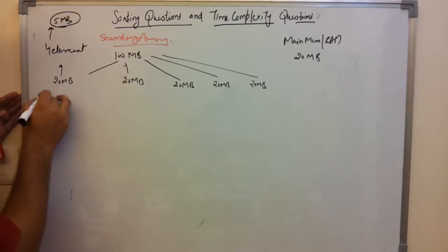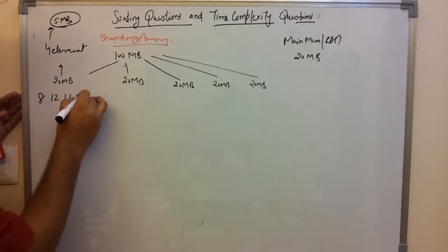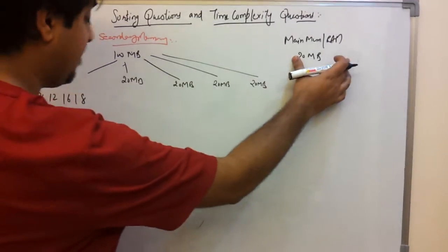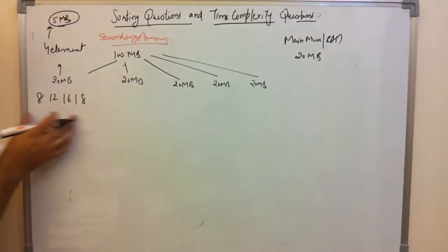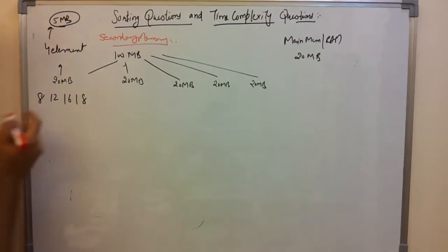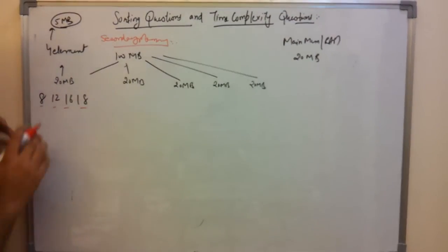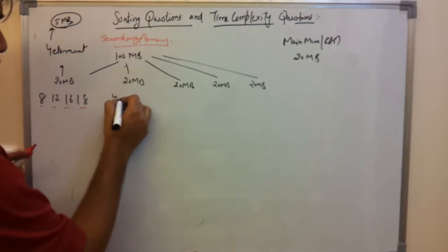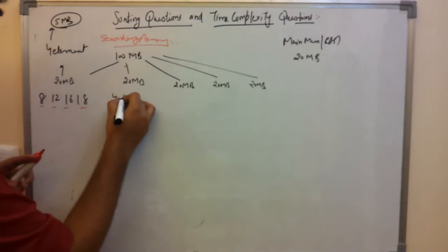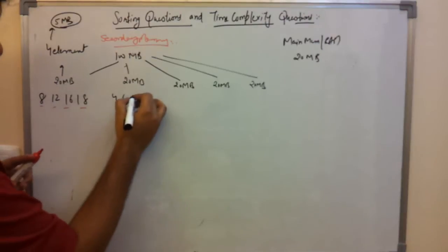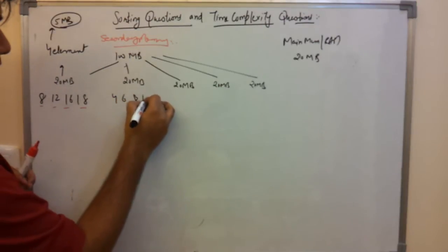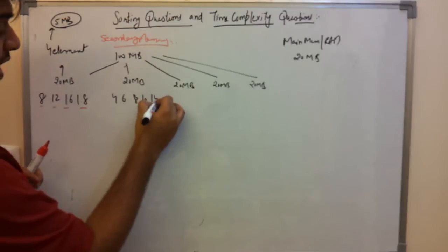Let's say the first group of 20 MB contains: 8, 12, 16, 18 — this is unsorted data loaded into main memory and sorted. The second group contains: 4, 6, 8, 10, 14.